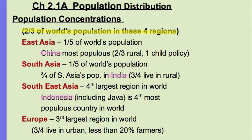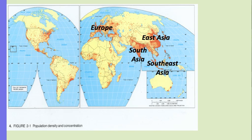The majority of people in these Asian regions — more than half — still live in rural areas on their farms, not in the city. Europe, on the other hand, has three-fourths of its people living in urban areas, with less than 20% living on farms. So those are the four regions where most of the world lives. Here is a dot map that shows where the population clusters are.